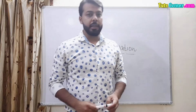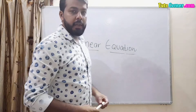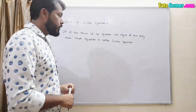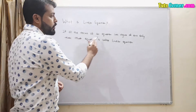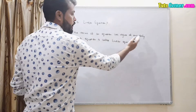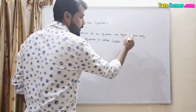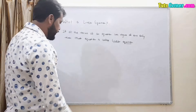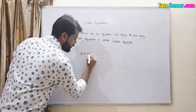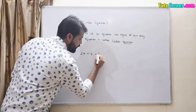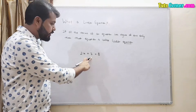Hello people, welcome to our channel. Today we are going to look into linear equations. So what is a linear equation? If all the terms of an equation have a degree of one only, then that equation is called a linear equation. Let us take an equation like 2x plus 3 equals to 8. Here 8 and 3 are constants.